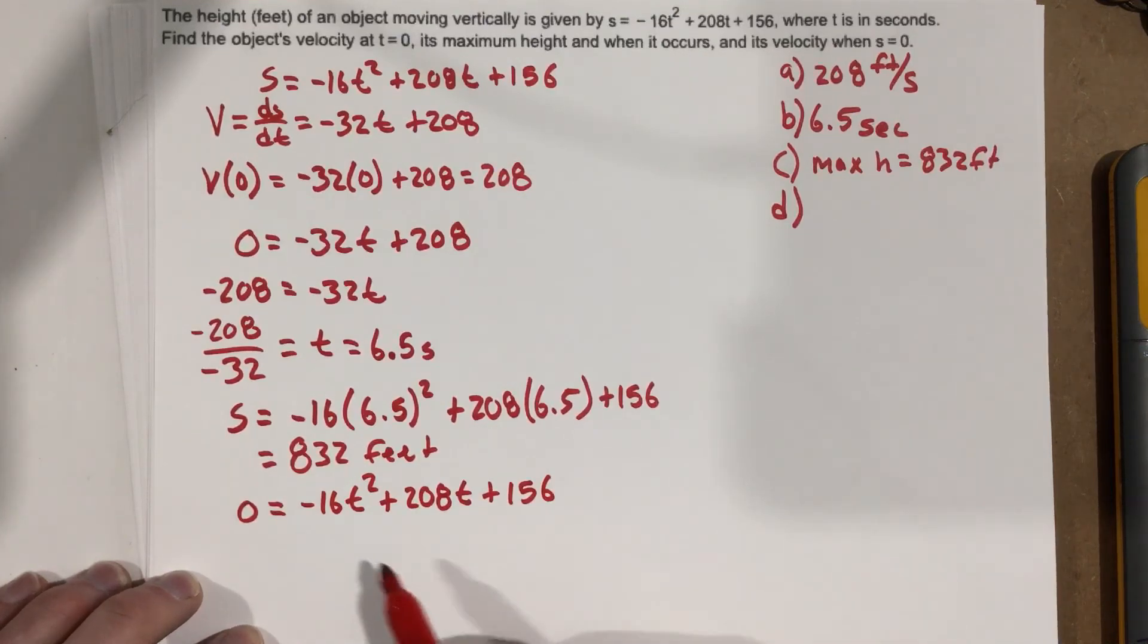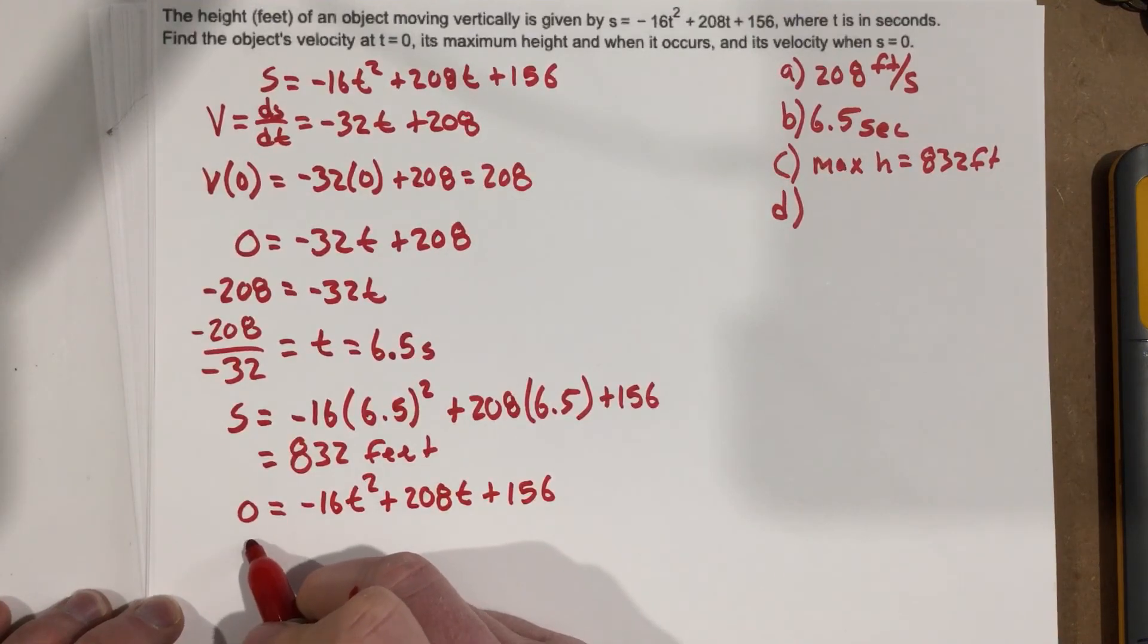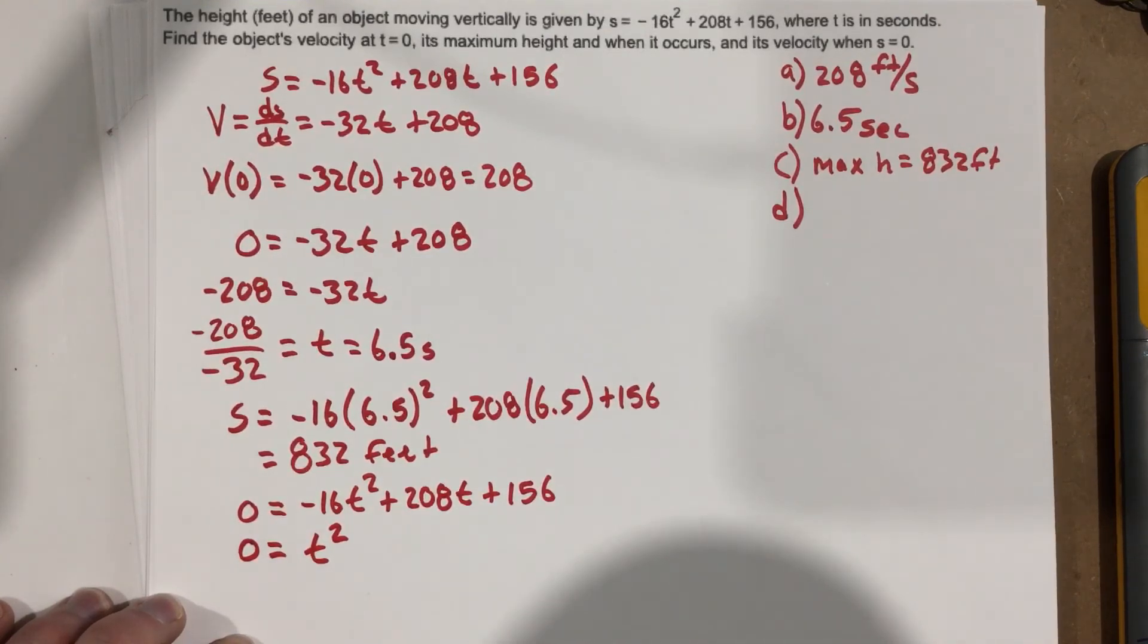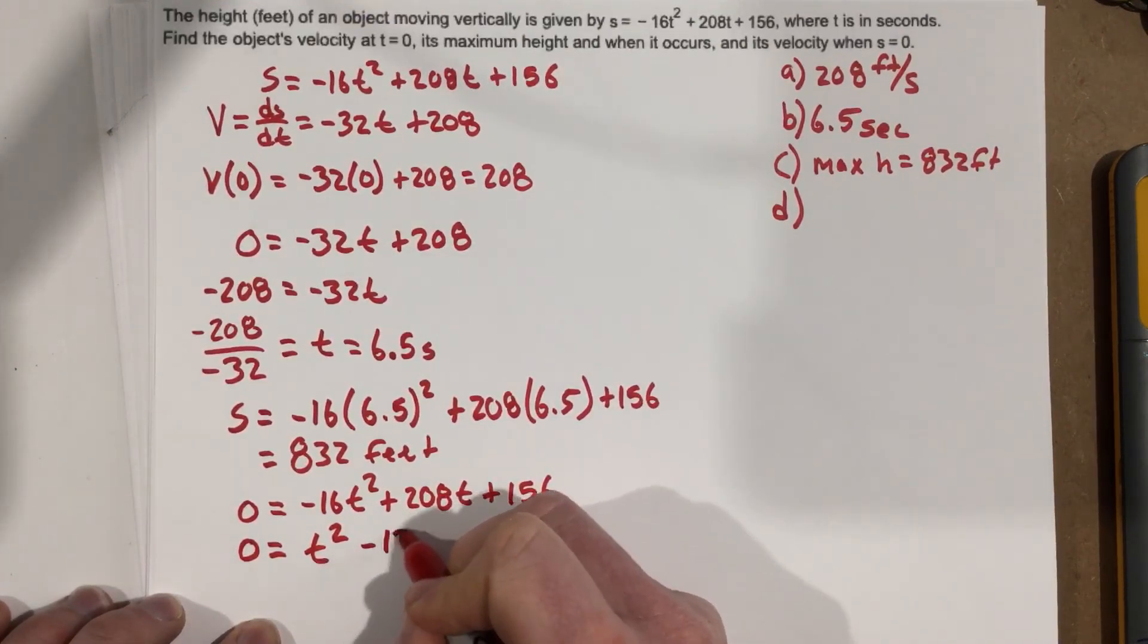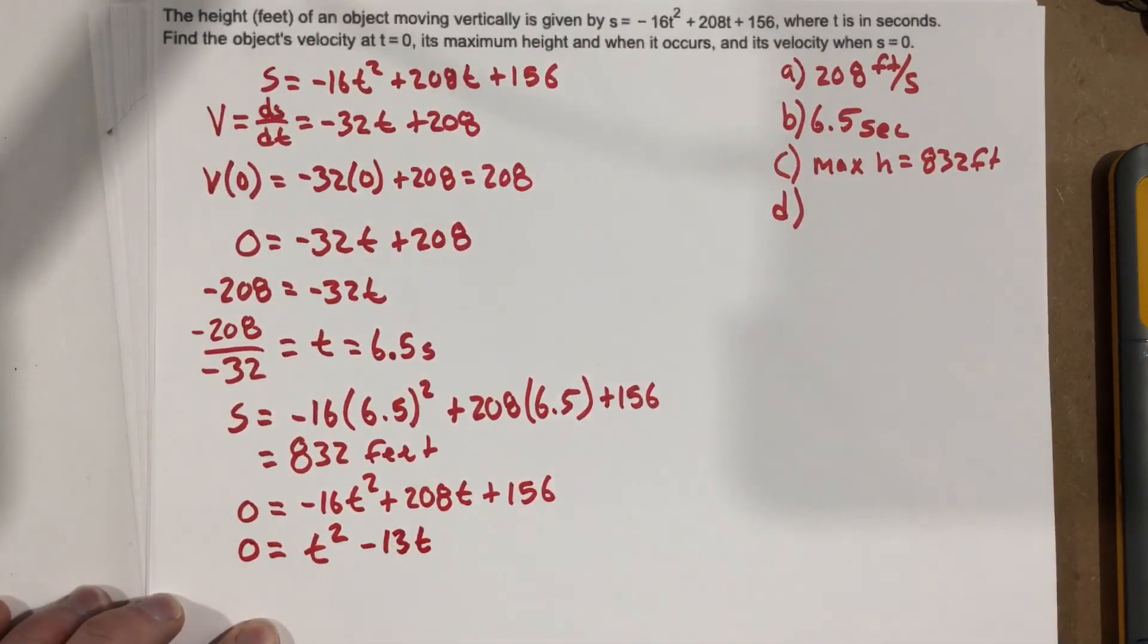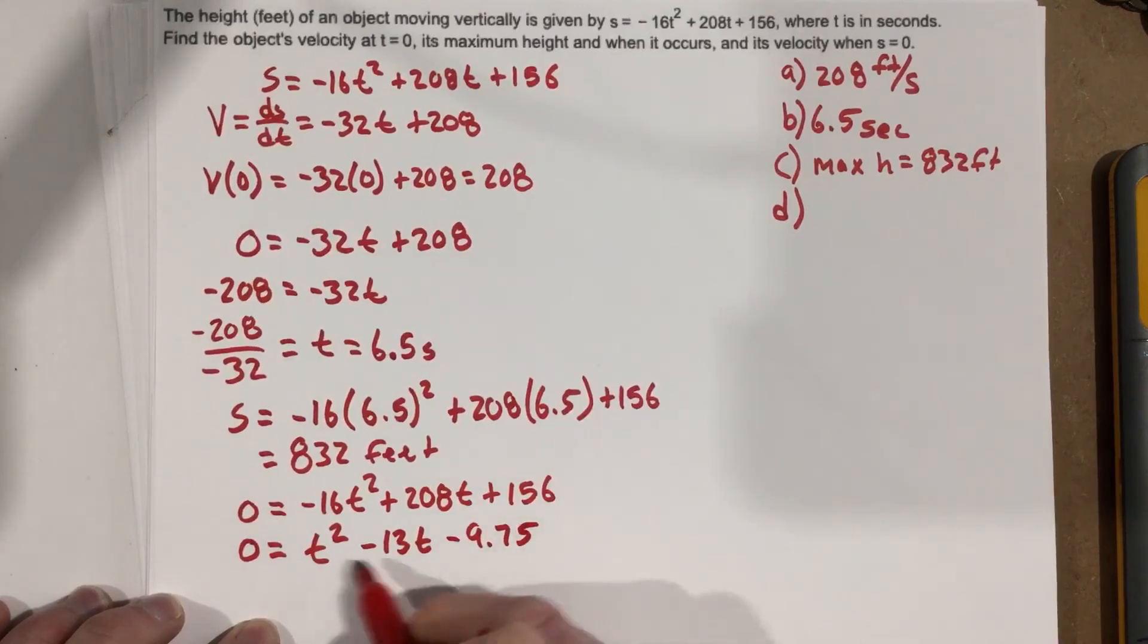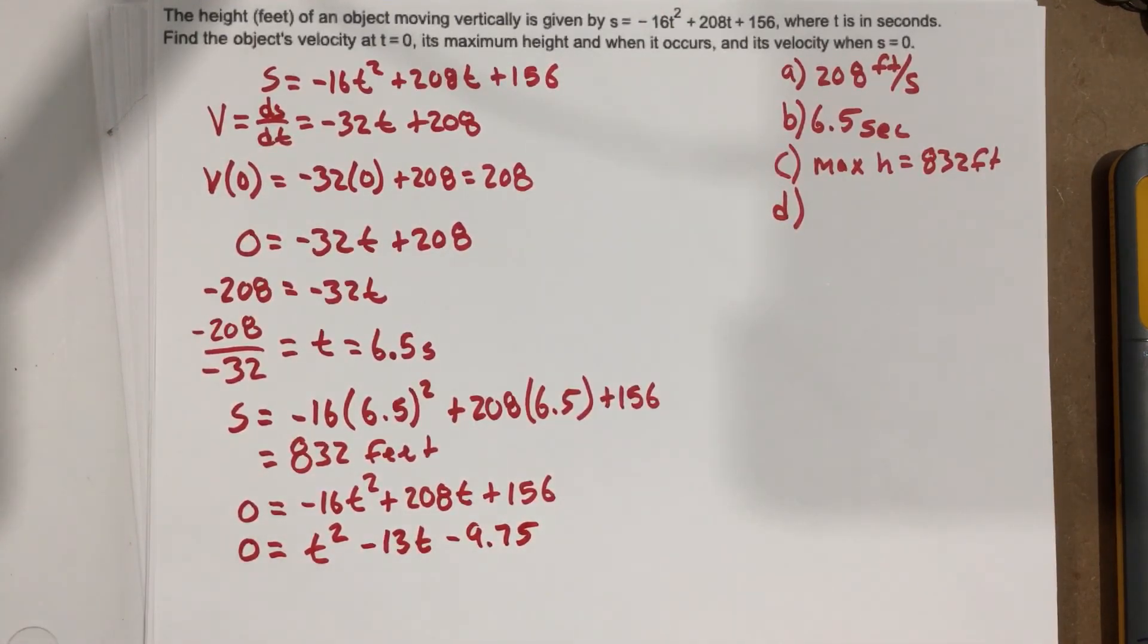So what I'm going to do first is I'm going to divide everything by negative 16. And let's see what happens here. Here's 0 equals t squared. 208 divided by negative 16 is negative 13. So minus 13t. And 156 divided by negative 16 is minus 9.75. Okay, so I just made them a little bit smaller so we can work with this.